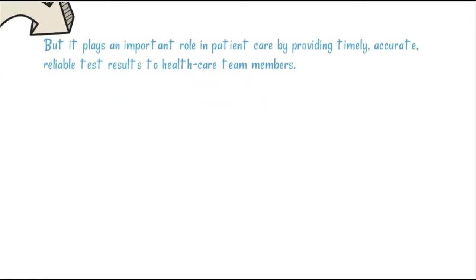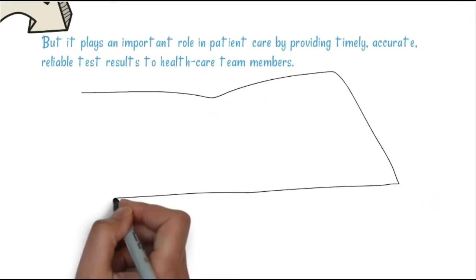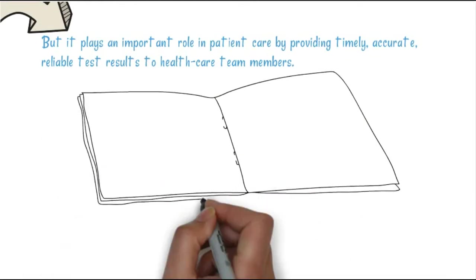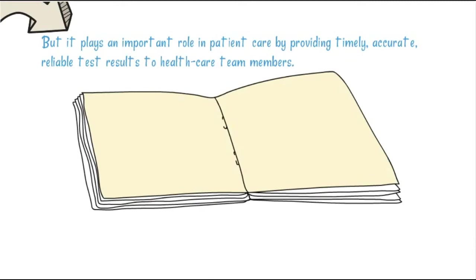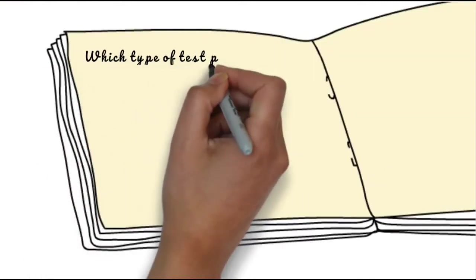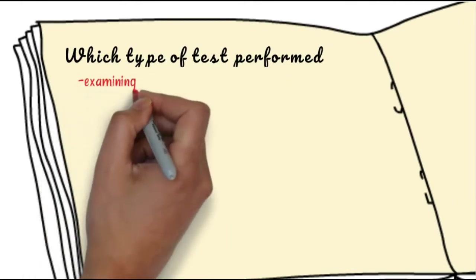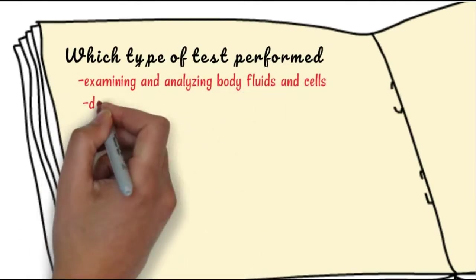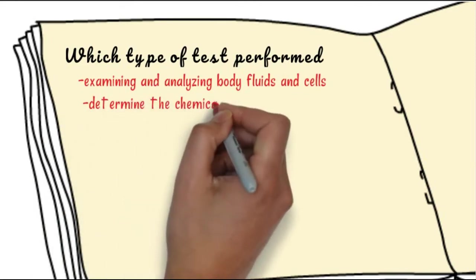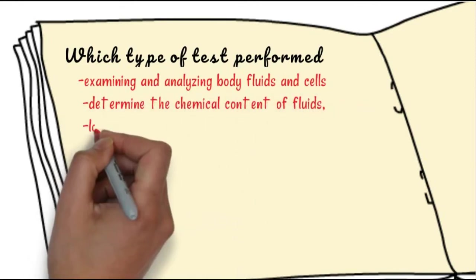Now we enter into another topic: which types of tests are performed? Tests include examining and analyzing body fluids and cells, determining the chemical content like glucose or protein levels, looking for parasites, bacteria, and other microorganisms.